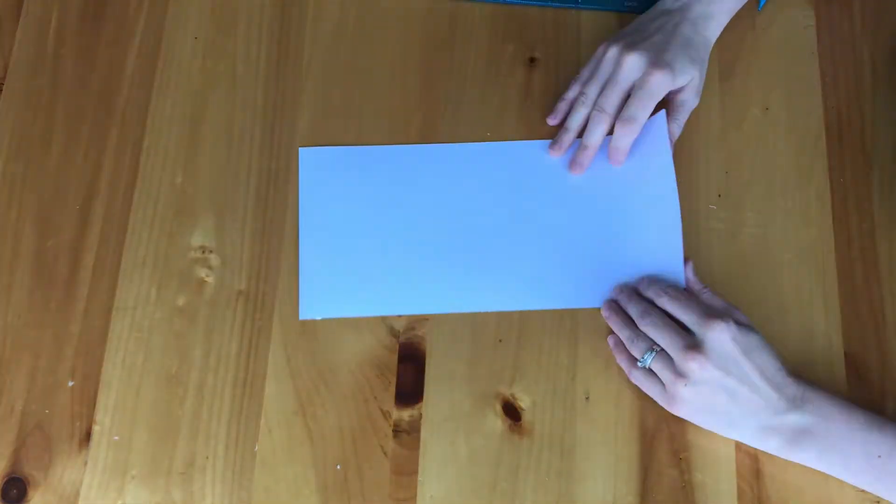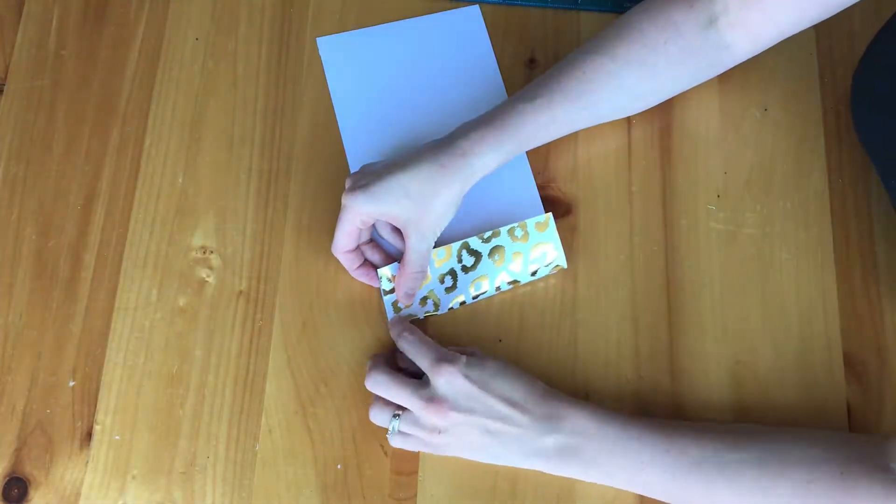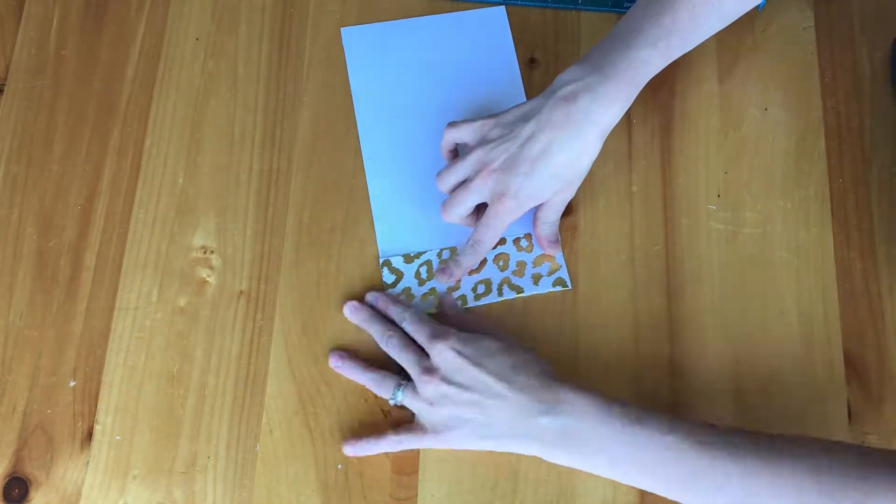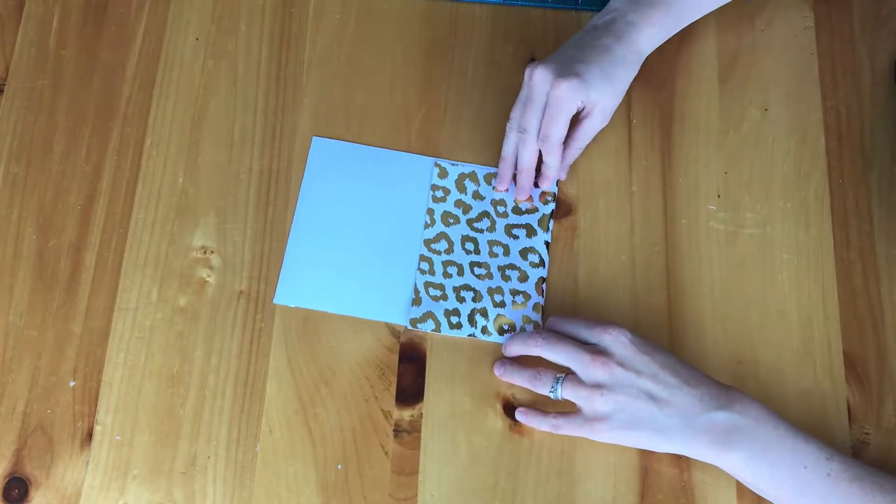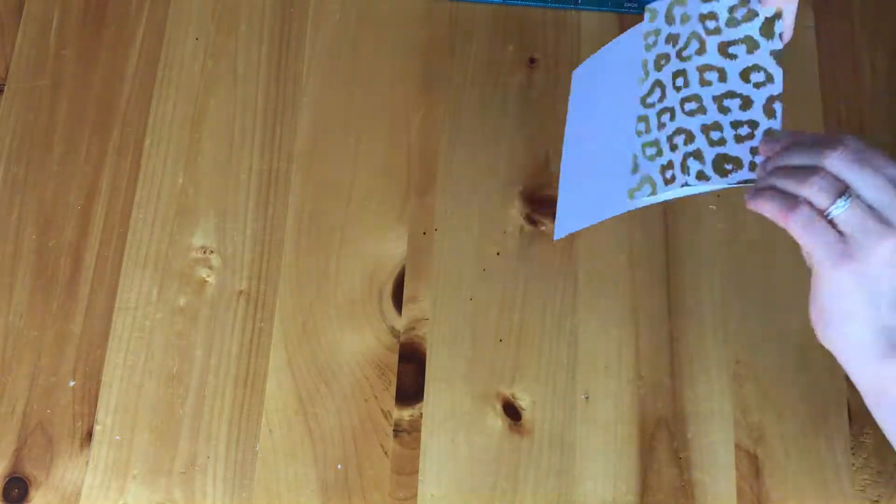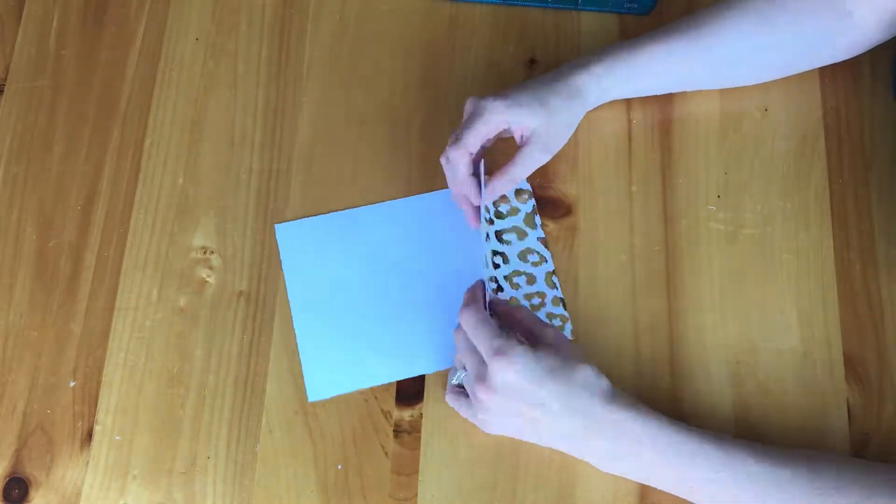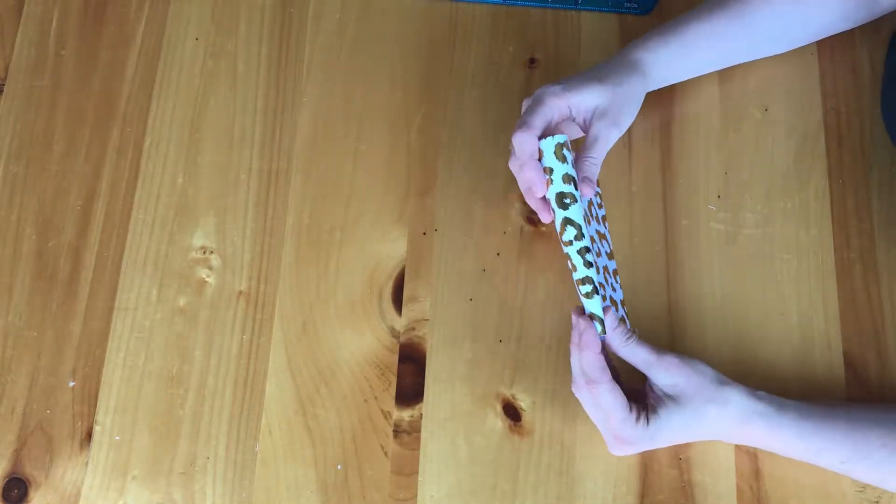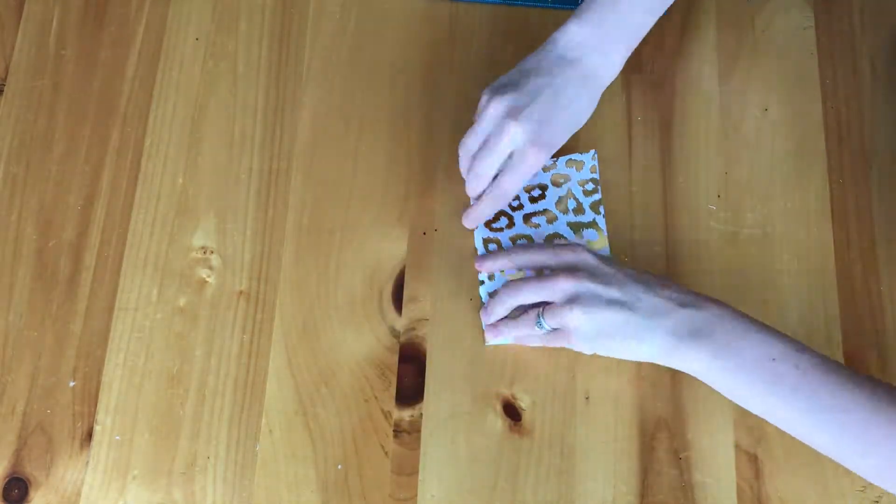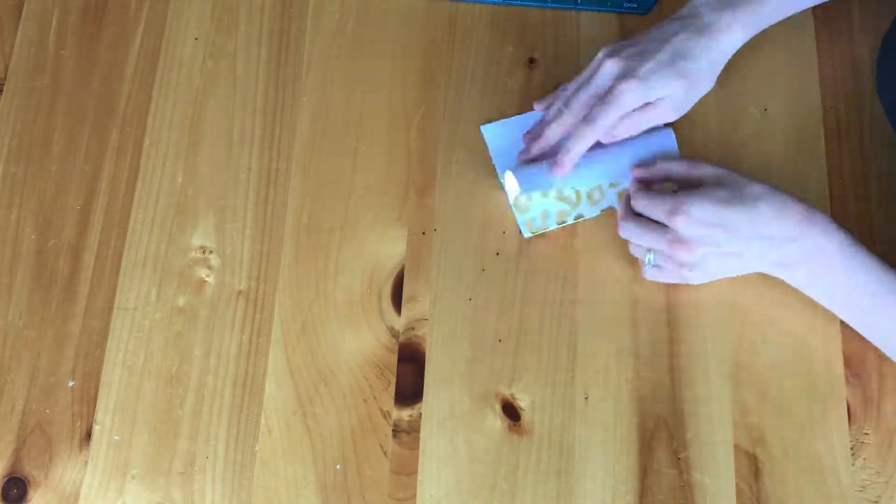Once you have it marked, you're going to score it at the 2 inch mark, the 4 inch mark, the 8 inch mark, and the 10 inch mark. Then you are going to go ahead and start making the openings that are like accordions or like a book that opens in the middle.